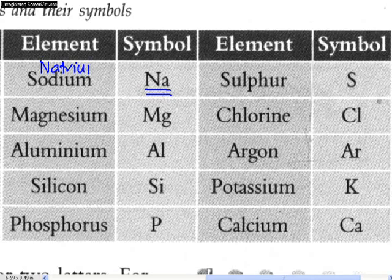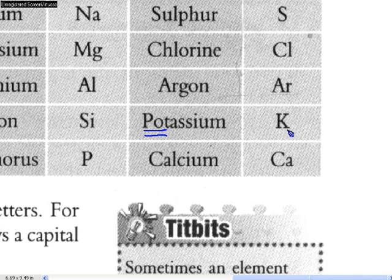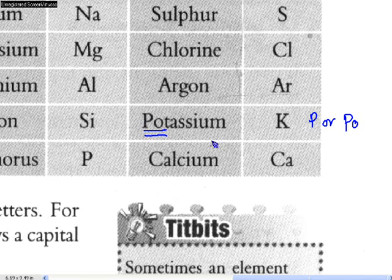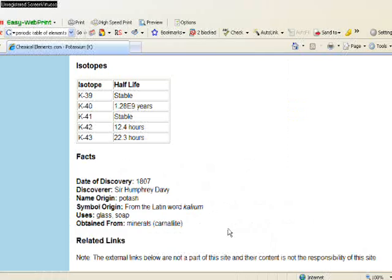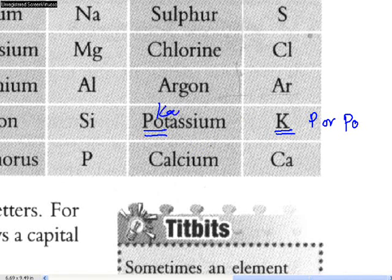In the same way, potassium should have the symbol P or Po if we go by the English name. But K originates from the Latin word kalium, K-A-L-I-U-M. That is the reason why potassium, or kalium in Latin, has the symbol K.